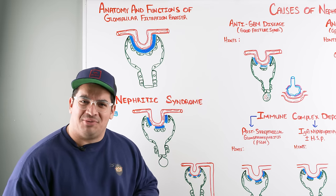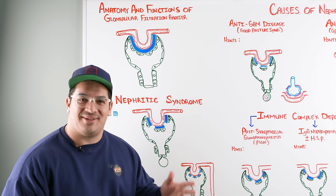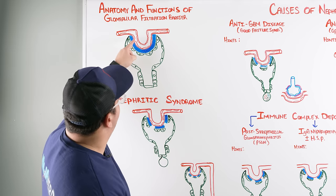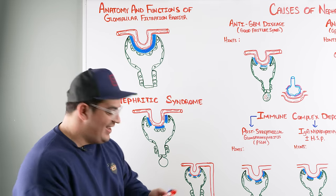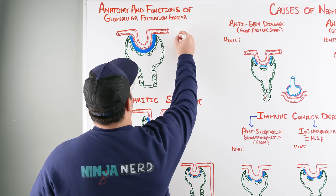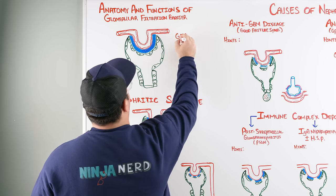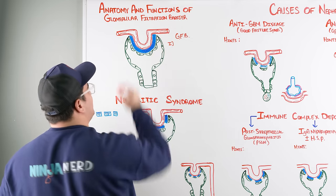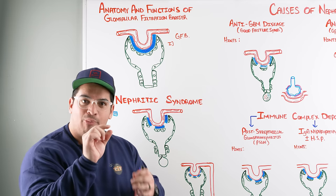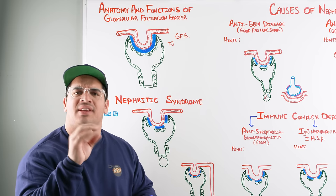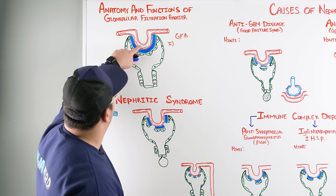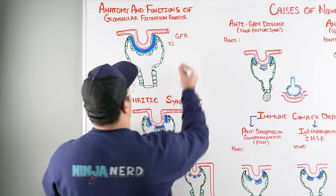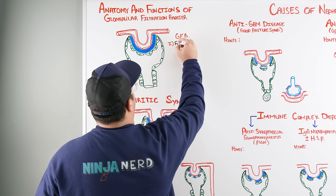The anatomy of the glomerulofiltration barrier is really critical to understand because it describes the pathophysiology behind nephritic syndrome. There are three components of the glomerulofiltration barrier, which I'll abbreviate as GFB. The first one is a fenestrated capillary, meaning it has little pores that allow plasma and certain things in the plasma filtrate to filter out of the blood and into Bowman's space.